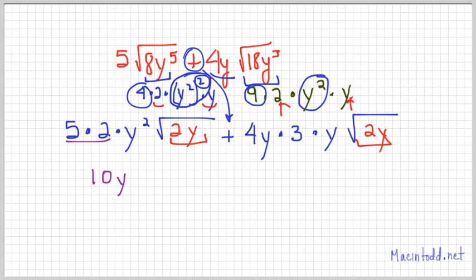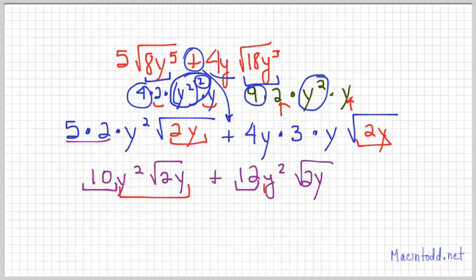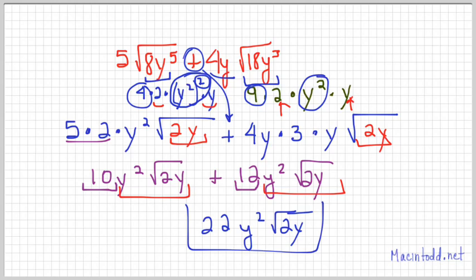It looks like I've got 10y²√(2y) and 12y²√(2y), so together I've got 22y²√(2y). And that is how you add radicals.